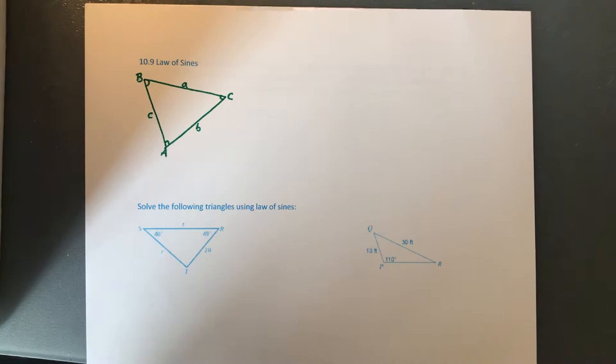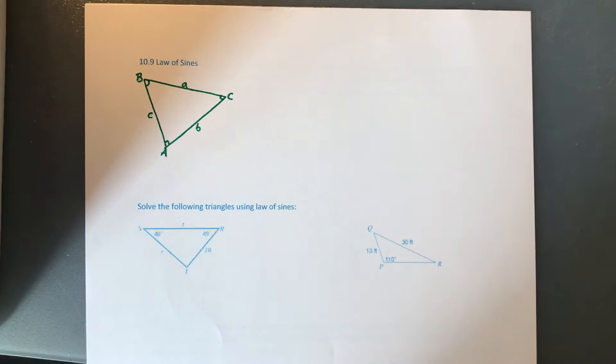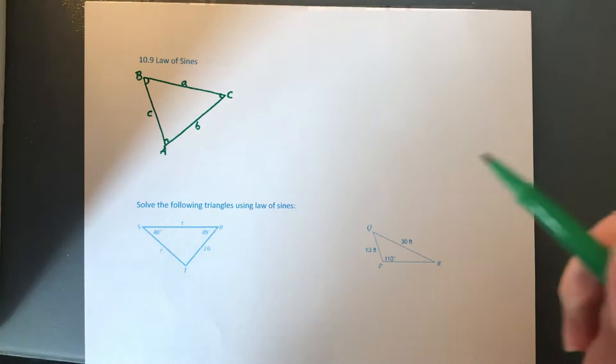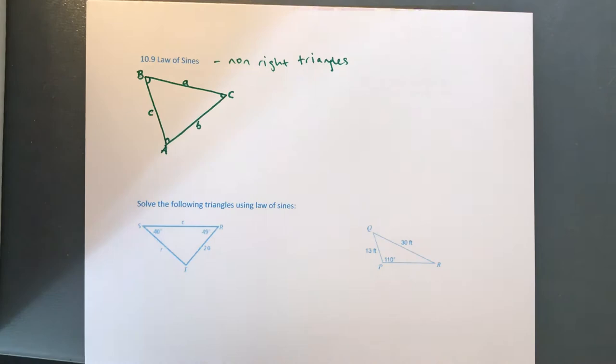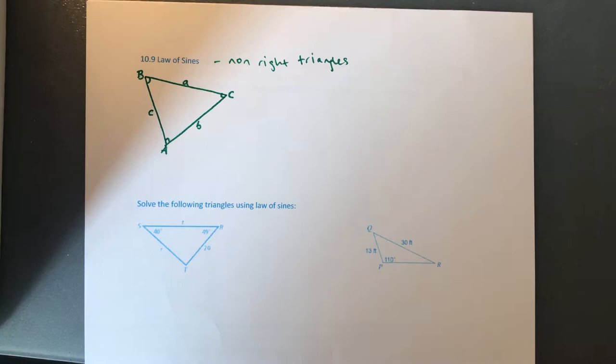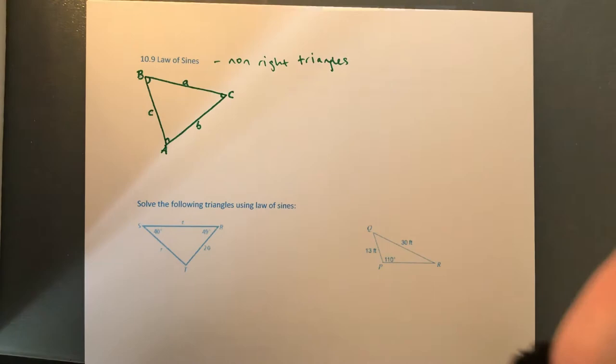Hey everyone! So this week we're changing gears a little bit and going back to learning how to solve missing pieces of triangles. This week we're going to learn about the Law of Sines, which is used to find missing sides and angles in a non-right triangle. This week is Law of Sines, and then next week we're going to talk about Law of Cosines, and that will be our school year.